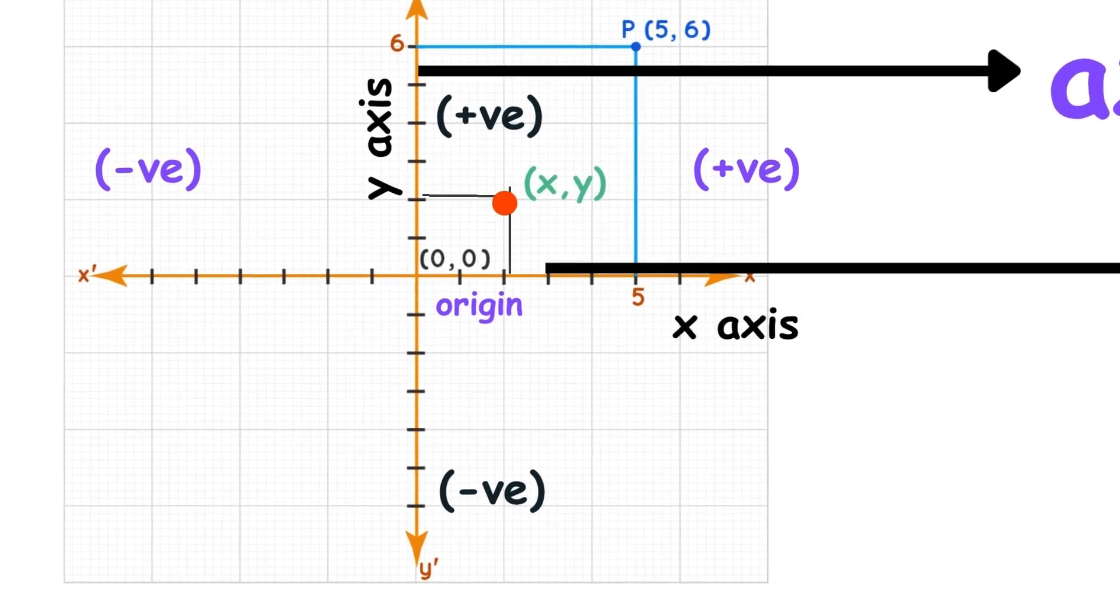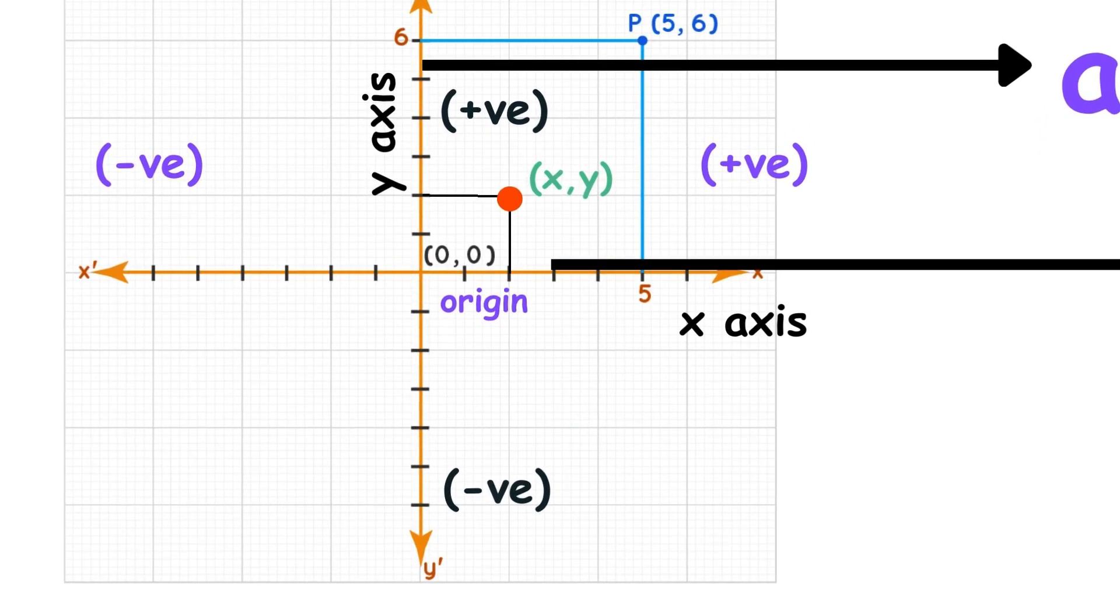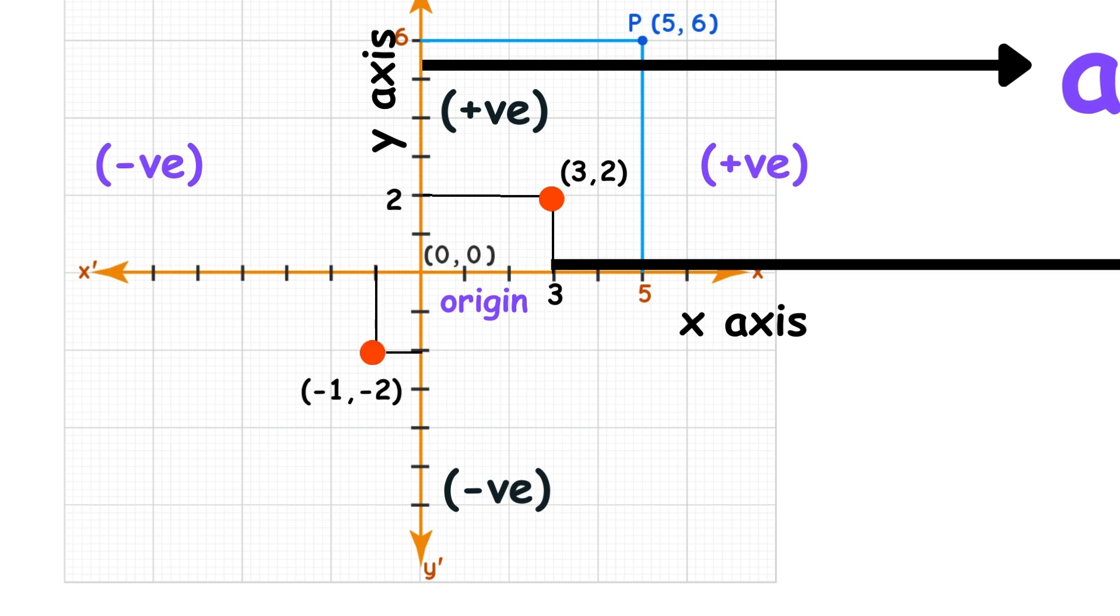and each coordinate represents the distance along each axis. For instance, the point 3 comma 2 has an x-coordinate of 3 and a y-coordinate of 2. The point negative 1 comma negative 2 has an x-coordinate of negative 1 and a y-coordinate of negative 2.